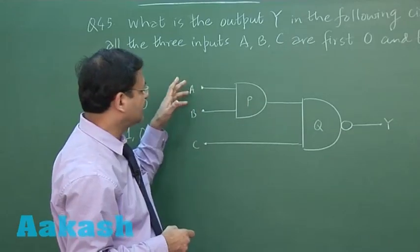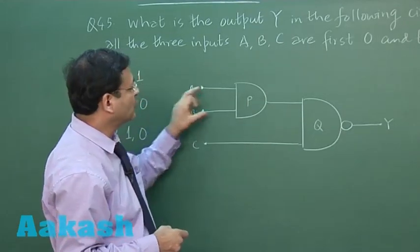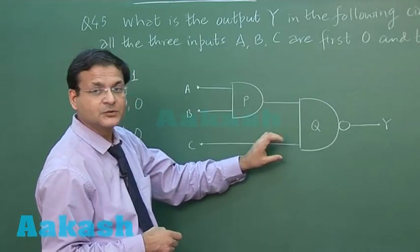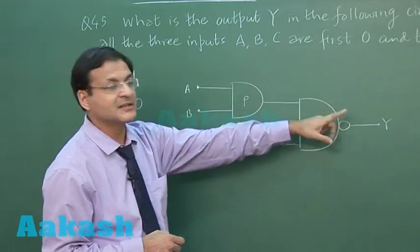And if all the 3 are 1 then 1 into 1 going that is 1 here and this 1 is coming again. So 1 into 1 multiplied by 1 and reverse is 0.